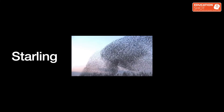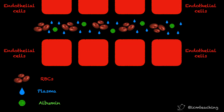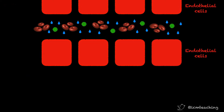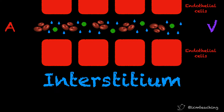In medical school, I learned about the Starling model to explain fluid flow across capillaries. Here we have a capillary containing red blood cells, plasma and albumin. Capillaries have an arterial and venous end and are lined with endothelial cells, and these cells have gaps between them with interstitial tissue on the other side. In muscle, connective tissue and lungs, these gaps are frequent and large, and in the brain they're infrequent and small — which we know as the blood-brain barrier.